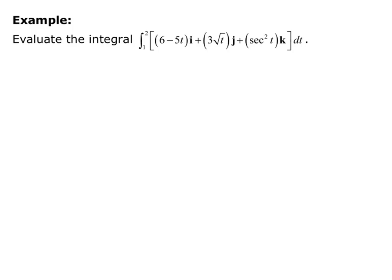In this example, we are asked to evaluate the integral from 1 to 2 of the quantity 6 minus 5t times i, plus 3 square root of t times j, plus secant squared of t times k dt. So my first step is to do it component-wise.